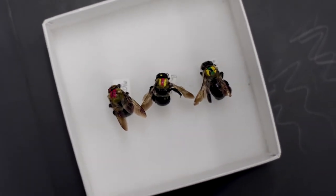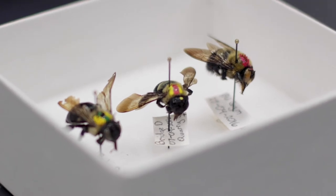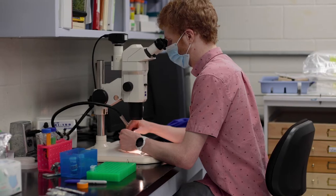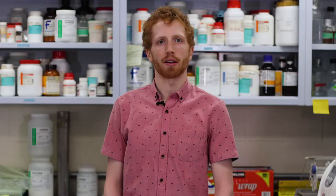I study social behavior among female eastern carpenter bees. These females can live on their own or in small groups of up to eight other females. I am aiming to identify what differentiates solitary and social females, as well as dominant and subordinate females.